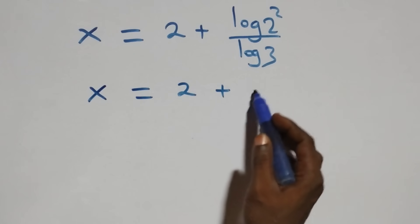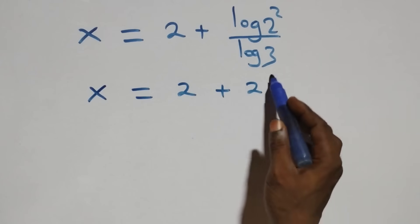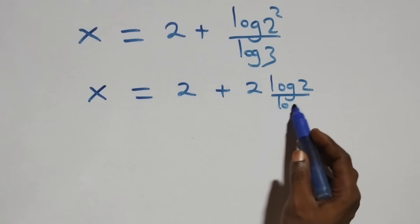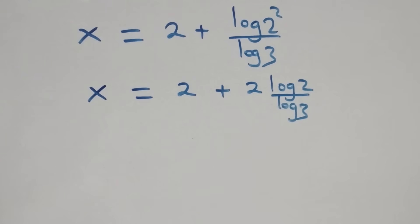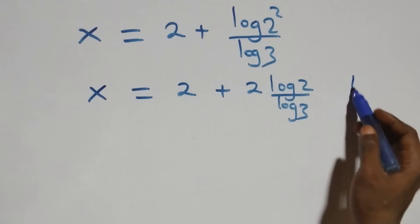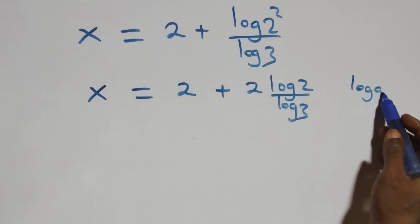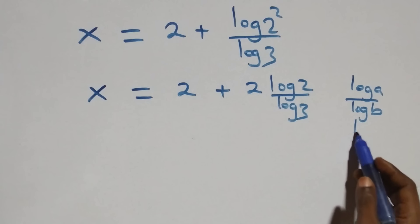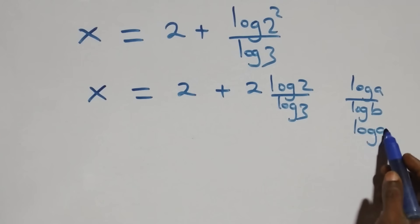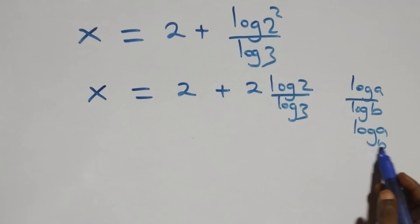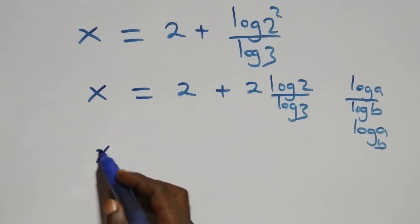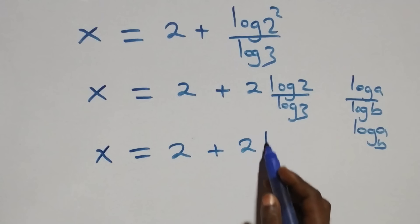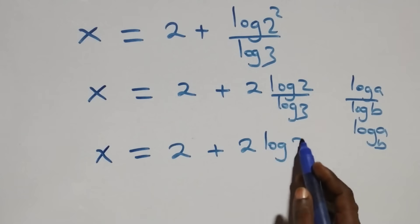We apply the power rule of logarithms, and 2 comes down: x equals to 2 plus 2 log 2 over log 3. Then we apply the change of base rule — when we have log a over log b, this is the same as log a to base b — so x equals to 2 plus 2 log 2 base 3.